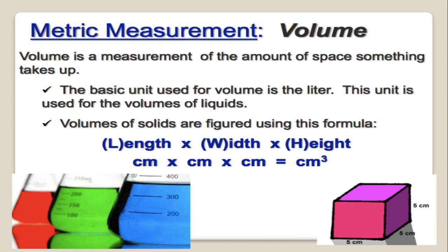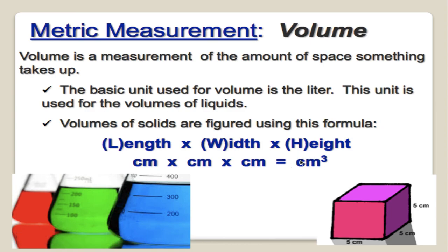Our next type of measurement is volume — the amount of space something takes up. Mass is stuff; volume is space — remember that. The basic unit of volume is a liter. We usually use liters when talking about a liquid or gas. For a solid, you'd calculate volume using length times width times height, giving you centimeters or meters cubed. Conveniently, one centimeter cubed equals one milliliter in metric, so it ends up being the same amount, which is super helpful.